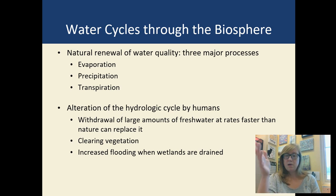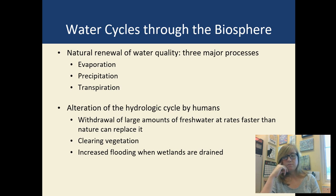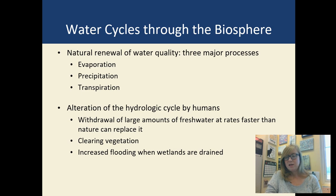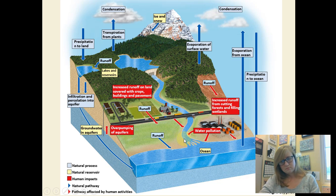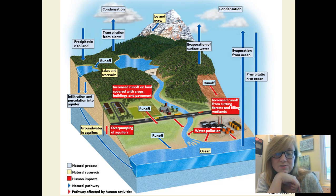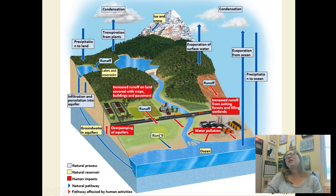We clear vegetation to mine or build farms, which causes desertification, more runoff, and increased flooding. When we drain wetlands — which stop floods and absorb water — that area will flood. Looking at the water cycle diagram: blue arrows are natural pathways, red arrows show where humans have an impact.